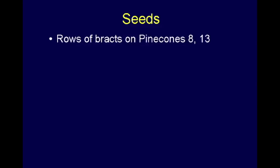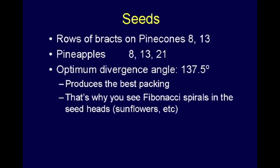About seeds: the rows of bracts on pine cones is 8 or 13 — there are two rows. On pineapples there are three rows: 8, 13, and 21. It turns out there's an optimum divergence angle of 137.5 degrees, which is in effect a fraction of 360 that's a Fibonacci number. This produces the best packing, and that's why you always see Fibonacci spirals on sunflowers — two diverging spirals, both Fibonacci numbers.